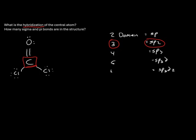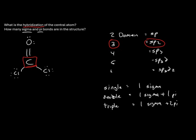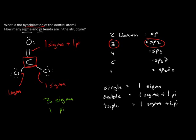You may also be asked about sigma and pi bonds. A single bond is one sigma; a double bond is one sigma and one pi; a triple bond is one sigma and two pi. In our molecule, the double bond to oxygen is one sigma and one pi, and each single bond to chlorine is one sigma. Counting all of them, we have a total of three sigma bonds and one pi bond.